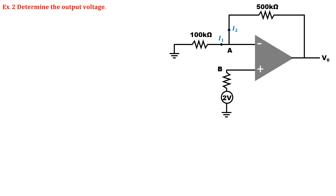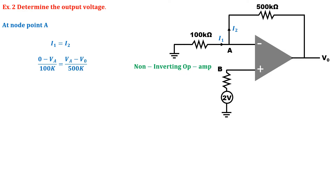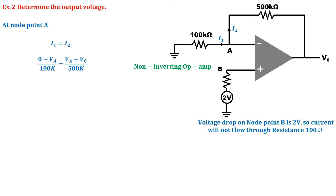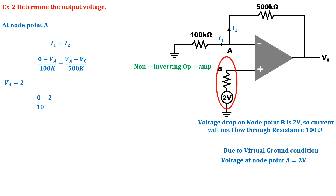In the next exercise, the input voltage is applied to the non-inverting terminal instead of the inverting terminal, so it will be called a non-inverting operational amplifier. Again at node point A, I1 equals I2. The value of I1 is 0 minus Va upon 100 kΩ, and I2 is Va minus Vo upon 500 kΩ. Since no current flows through the non-inverting terminal, the B terminal will have a potential of 2 V, and due to virtual ground, this voltage also appears at node point A. Solving this gives the output voltage as 12 V.